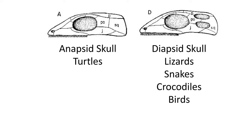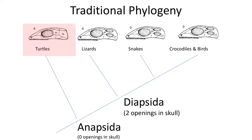Living and fossil turtles have an anapsid skull, in which there is no temporal fenestra. Historically, paleontologists had viewed turtles as a group of anapsid reptiles that survived the Permian extinction and diversified during the Triassic period, and the only living group of anapsid reptiles.